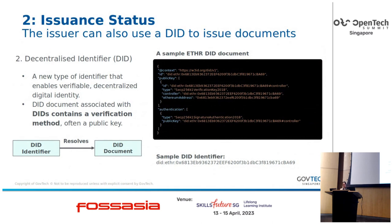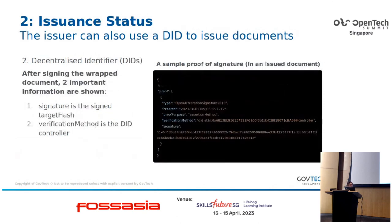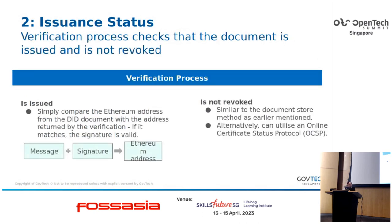A newer method is to use decentralized identifiers to issue documents. Currently we use DID Ethereum. After signing the open attestation document, it contains the issuer's DID and the signed target hash. During verification, we compare the Ethereum address from the DID document with the address returned by verification — if it matches, we know the signature is valid, the document has been issued, and it has not been tampered with.